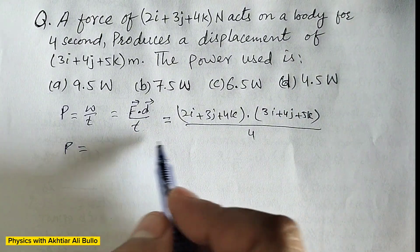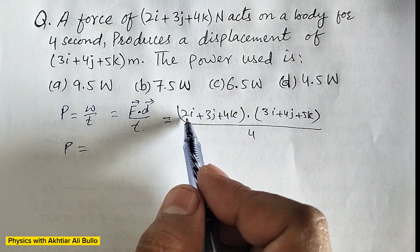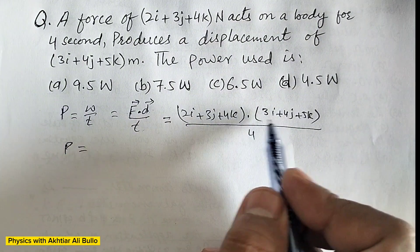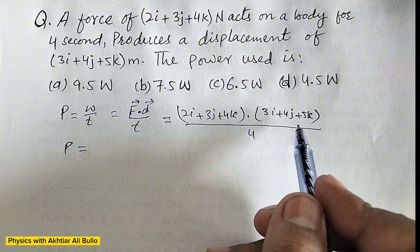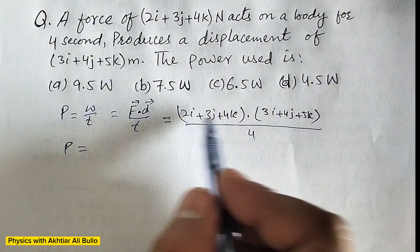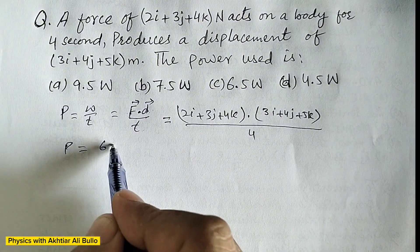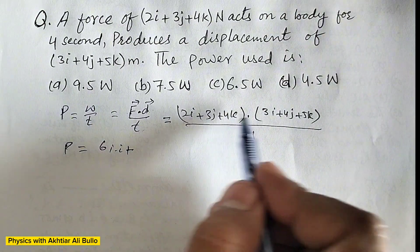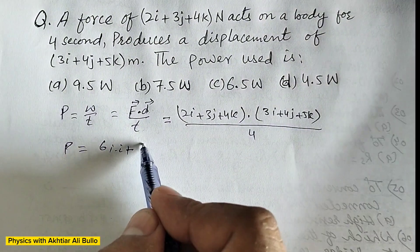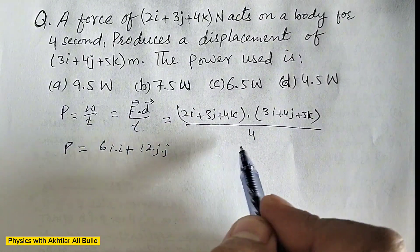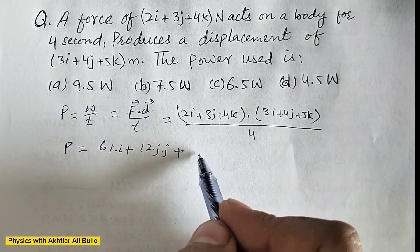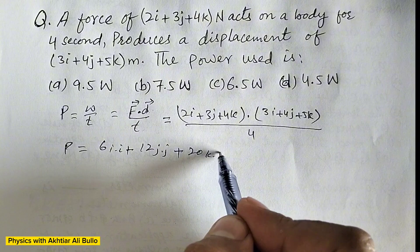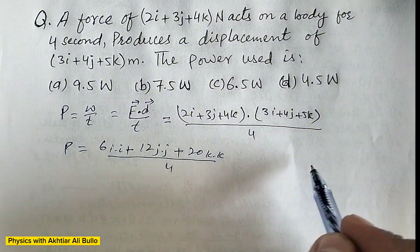So power will be equal to, we will multiply the value of i with i and value of j with j and the value of k with k. So 2, 3 the 6i dot i plus 3, 4 the 12 j dot j plus 4, 5 the 20 k dot k divided by 4.